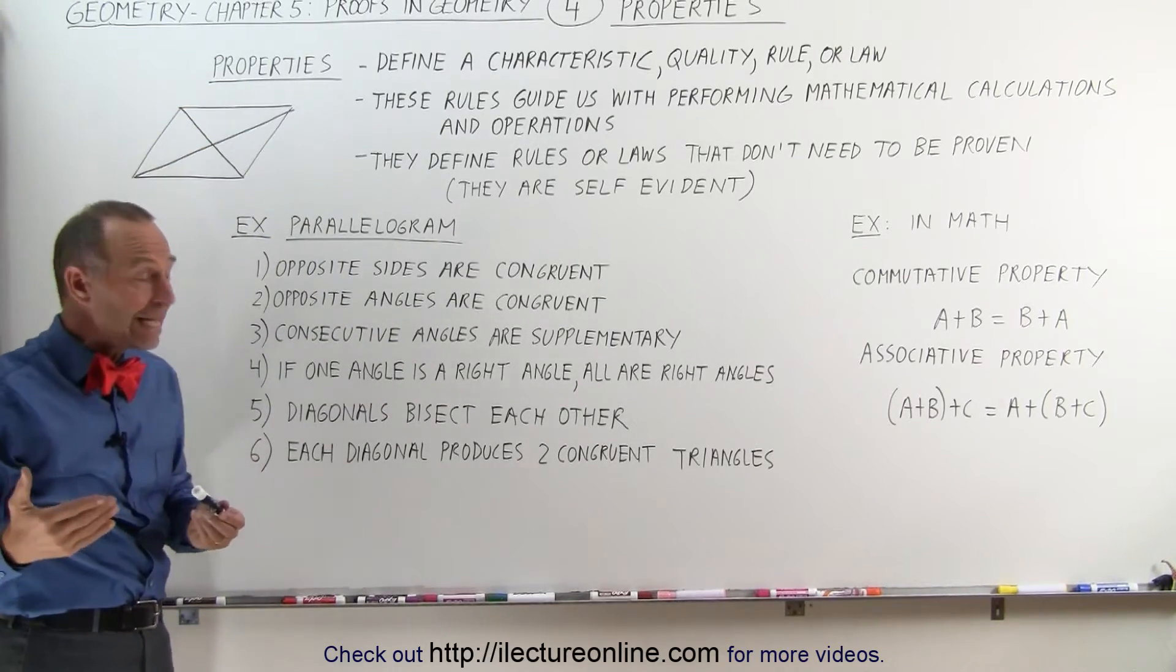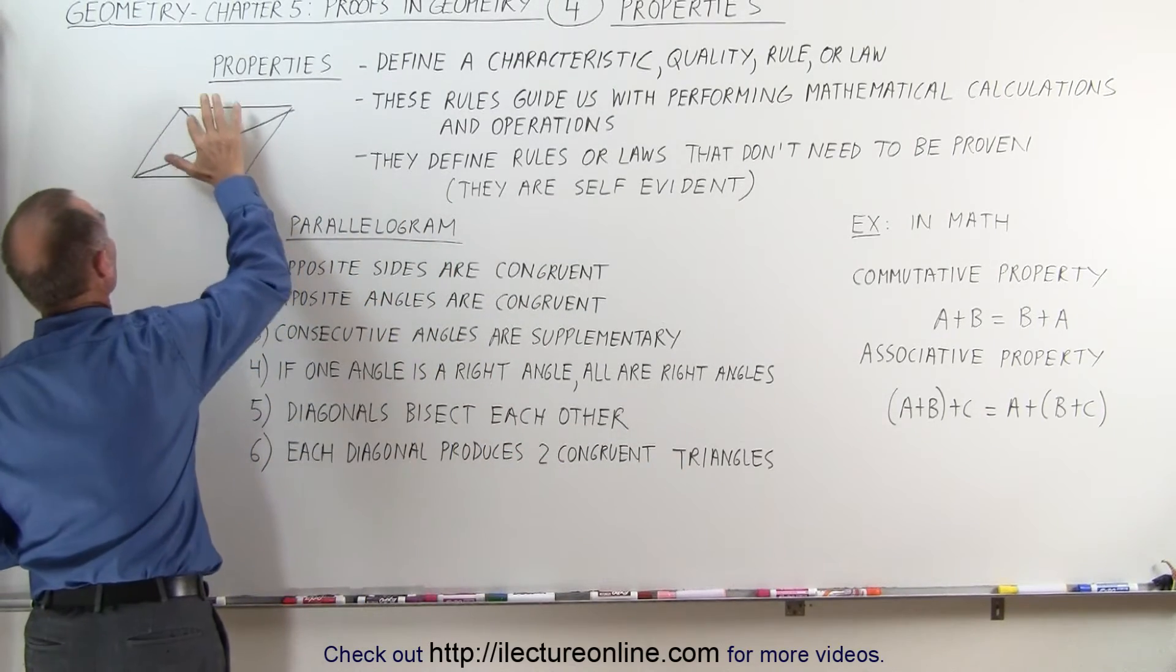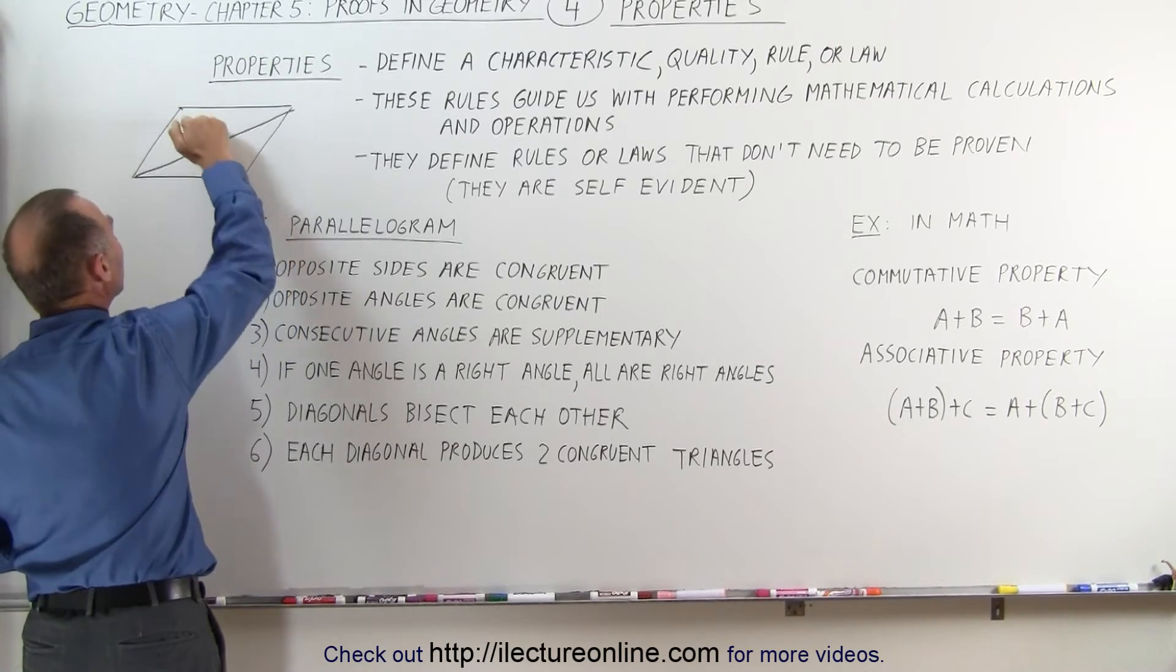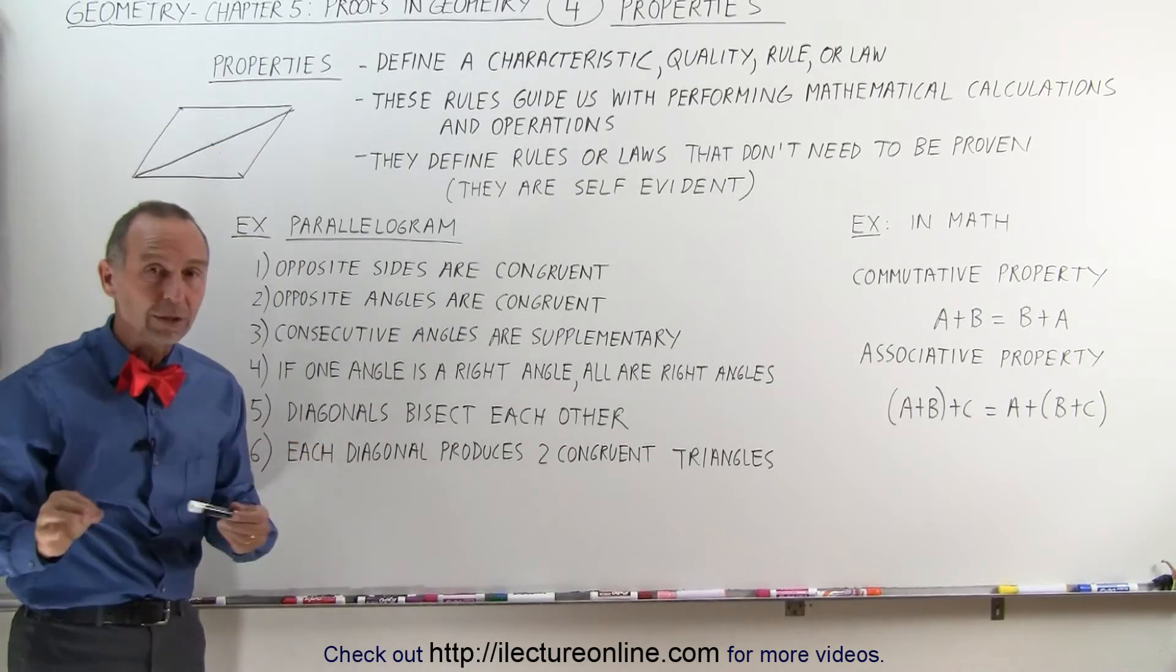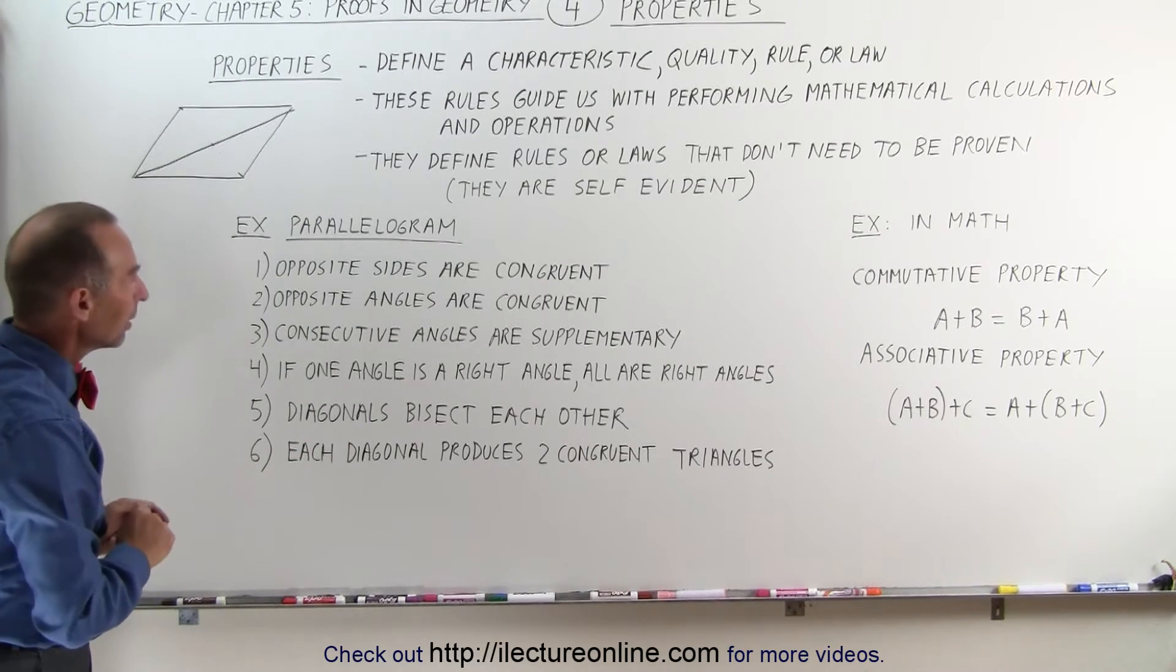Finally, each diagonal produces two congruent triangles. If we get rid of this one diagonal, and just look at the first one that we drew, notice that these two triangles are congruent. That is simply a property of a parallelogram.